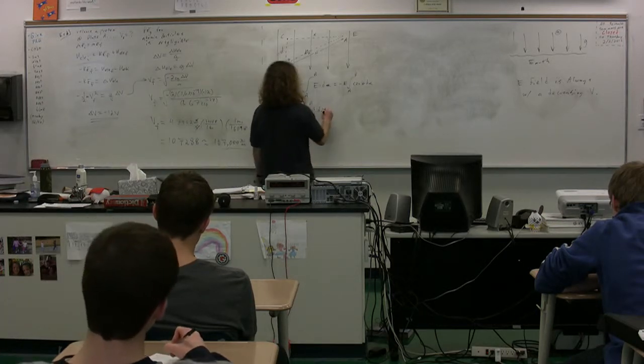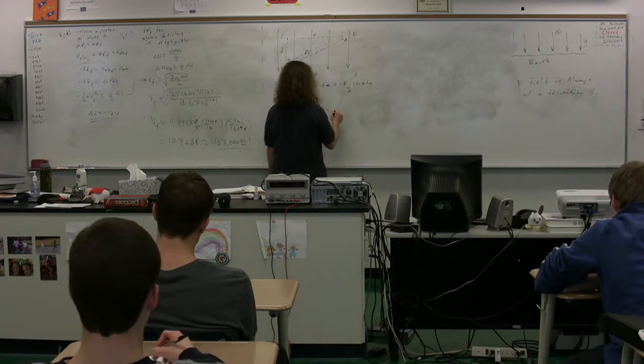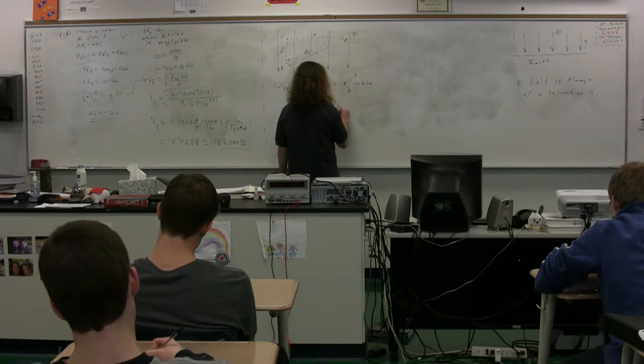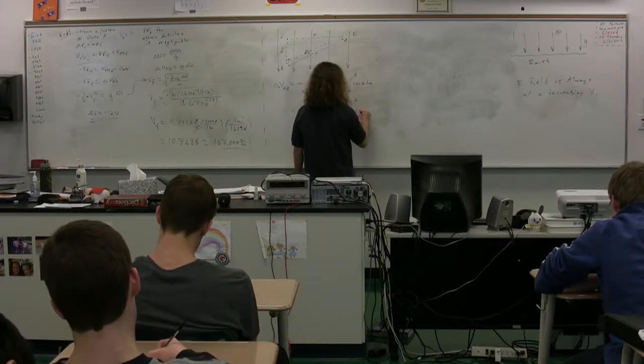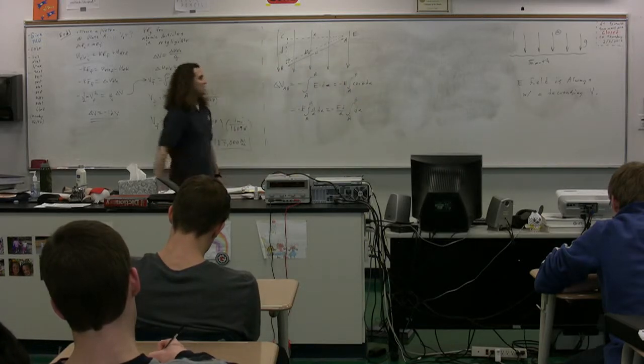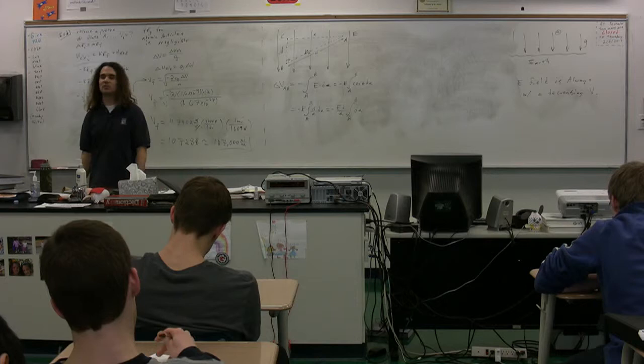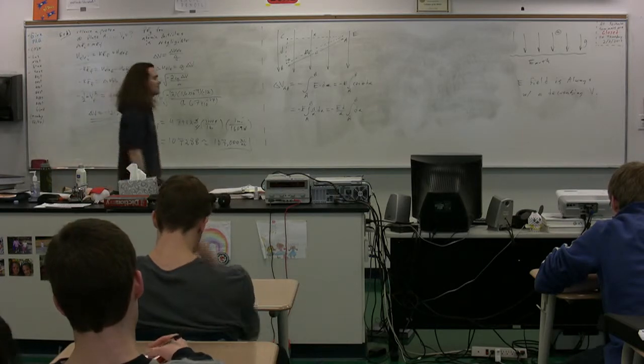So we have then D and S are both constants, so we have the negative E times D over S of the integral from A to B of Ds. What is the integral from A to B with respect to S?